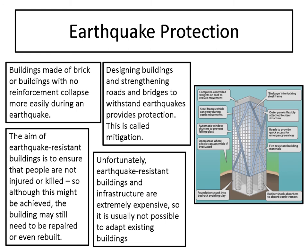Looking at the diagram on the right, they have computer-controlled weights on the roof to reduce movement. Steel frames sway with earth movements. Automatic window shutters prevent falling glass. Outside buildings, open areas are needed for evacuation. This idea is called a bird's cage interlocking steel frame — very rigid, but with flexible outer panels, because something too rigid is easier to break. Roads need good access and fire-resistant building materials. At the foundations, rubber shock absorbers mean the building absorbs vibrations rather than shattering. Foundations must avoid clay, because clay fills with water and sinks — that's called liquefaction.